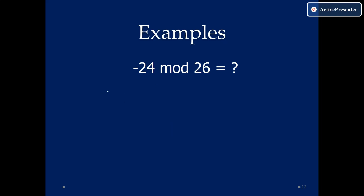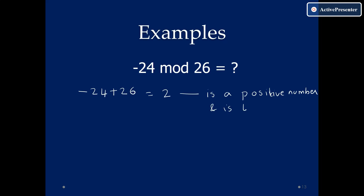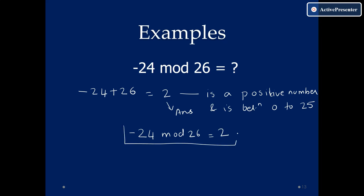Let us solve minus 24 mod 26. Minus 24 is a negative number, so add B, which is 26 — you get 2. This is a positive number, and it is between 0 to B minus 1, which is 25. So 2 is the final answer. Minus 24 mod 26 equals 2.